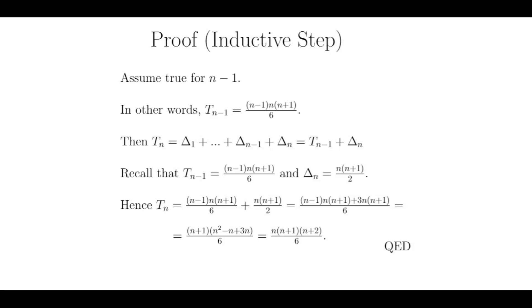But recall from a previous video on triangular numbers that the nth triangular number delta sub n is equal to n times n plus 1 divided by 2. Now that we have everything in terms of n, we can apply our algebra and simplify.